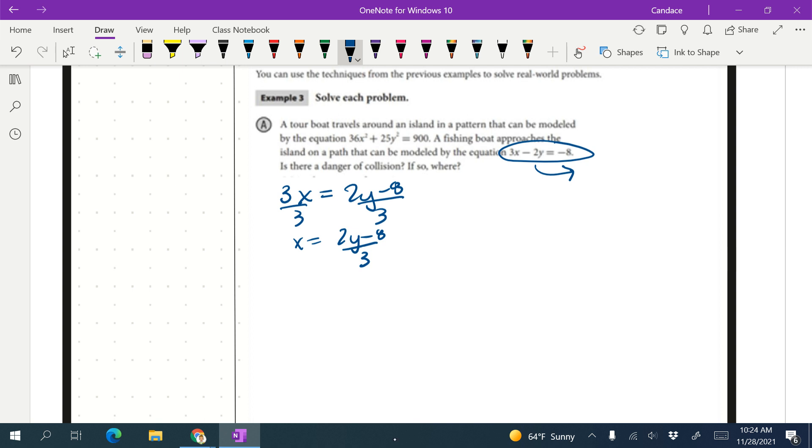We're going to take that now and substitute it in for the x in the second equation. So we've got 36 times, I'm going to put parentheses for the x, squared plus 25y squared equals 900. And then I'm going to substitute in 2y minus 8 over 3.